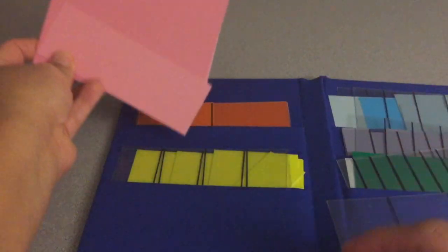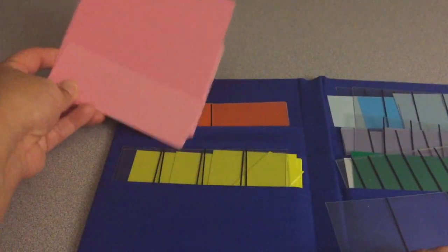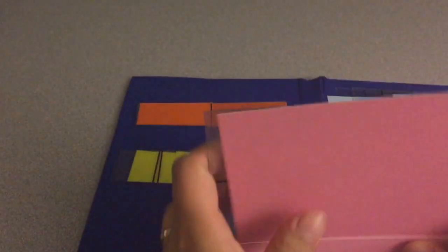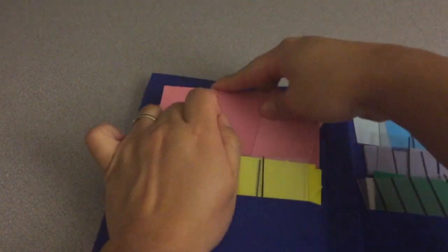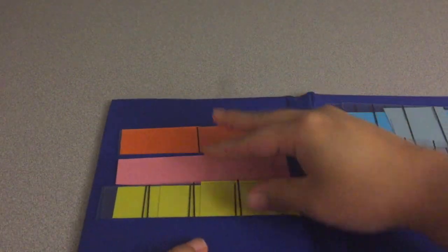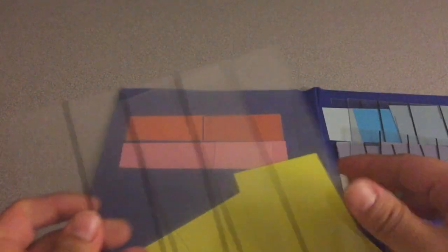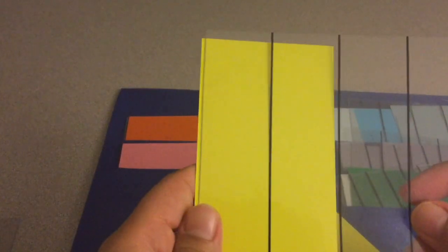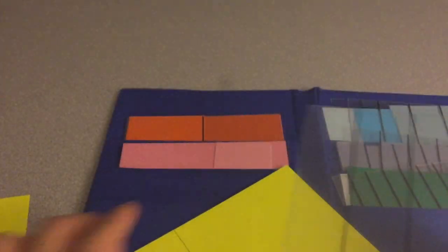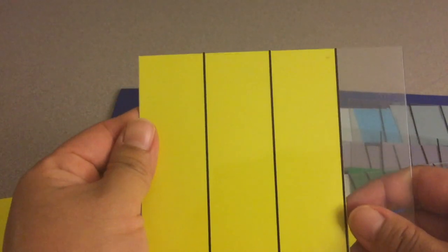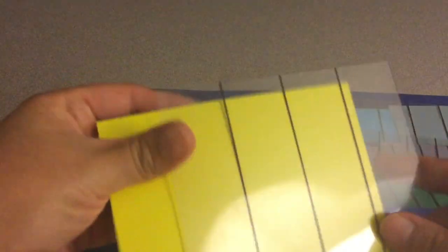I'll do it for the fourths because after that it does get a little bit too much to be handling with for every single one of them. So this is the fourths, two fraction overlays, the one fourth, the two fourths, the three fourths, and the whole.